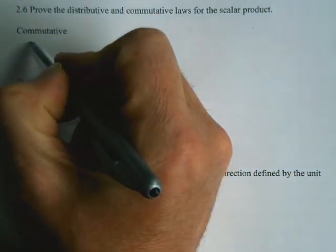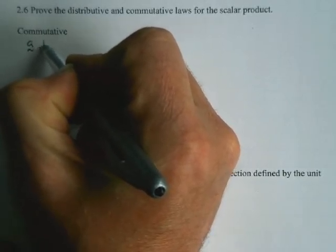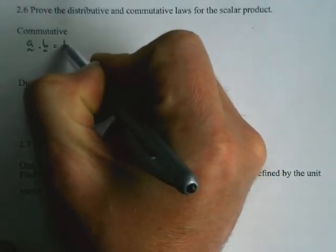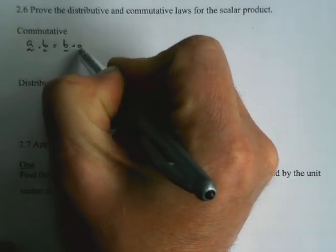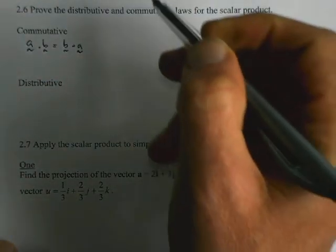Commutative just means that a.b is equal to b.a. And for you to prove that, which I'm going to leave as an exercise for you to do yourself.